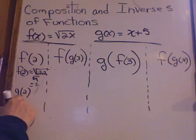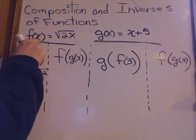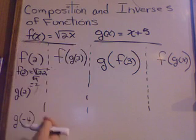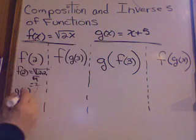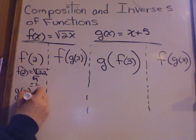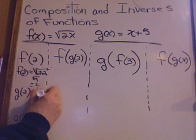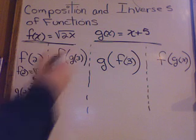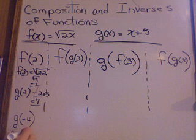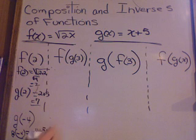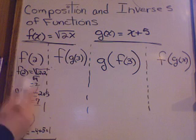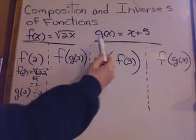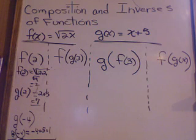All right. g of 2. What function should I use? f function or g function? I hope you said g. So, g of x equals x plus 5. So, g of 2 equals 2 plus 5 is 7. How about g of negative 4? g of negative 4 equals negative 4 plus 5 equals 1. When you do these for homework, I want you to write out the steps. So, you copy the function and then you show how you plug in the numbers and get the final answer.